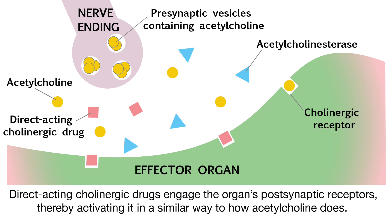There are two types of cholinergic drugs: direct acting and indirect acting. Direct acting cholinergic drugs bind to cholinergic receptors on specific effector organs, stimulating the organ in a similar way as acetylcholine. They are synthetic derivatives of choline and have a widespread systemic effect including cardiac muscle, smooth muscle, exocrine glands, and the eye.